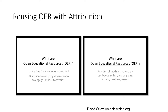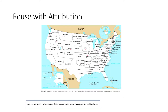Open Educational Resources are free to access online and available for anyone to incorporate into their own course materials. If I wanted to reuse this figure from an OpenStax textbook, I would simply add the attribution statement you see at the bottom, access for free at this OpenStax.org URL.